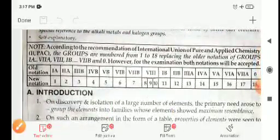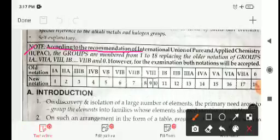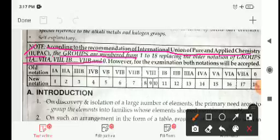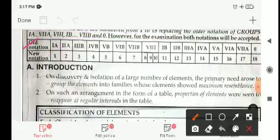According to the recommendation of the International Union of Pure and Applied Chemistry, known as IUPAC, the groups are numbered from 1 to 18, replacing the older notations of Group 1A, 7A, 3A, 1B, 7B, and 0. These were the older notations studied in your previous class, but now groups are simply numbered 1 to 18.